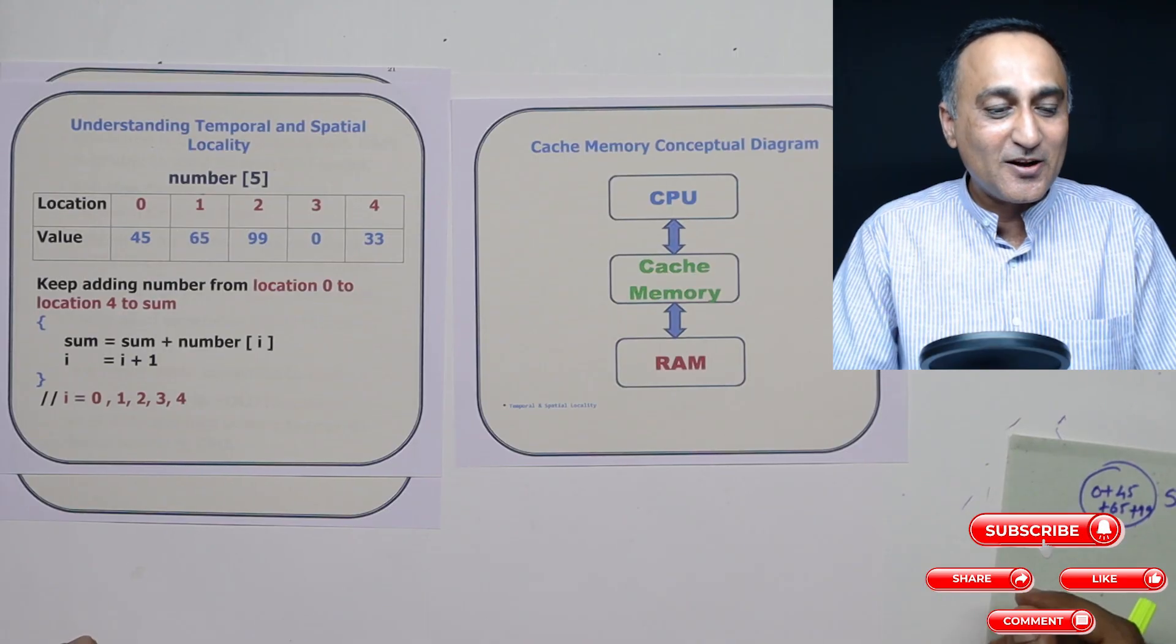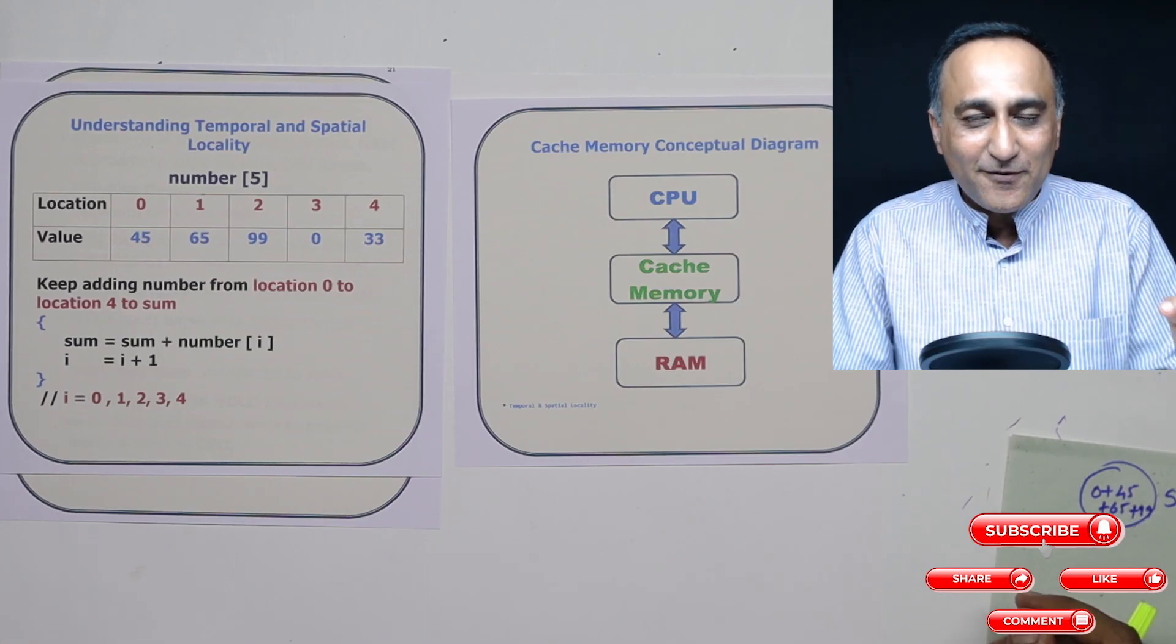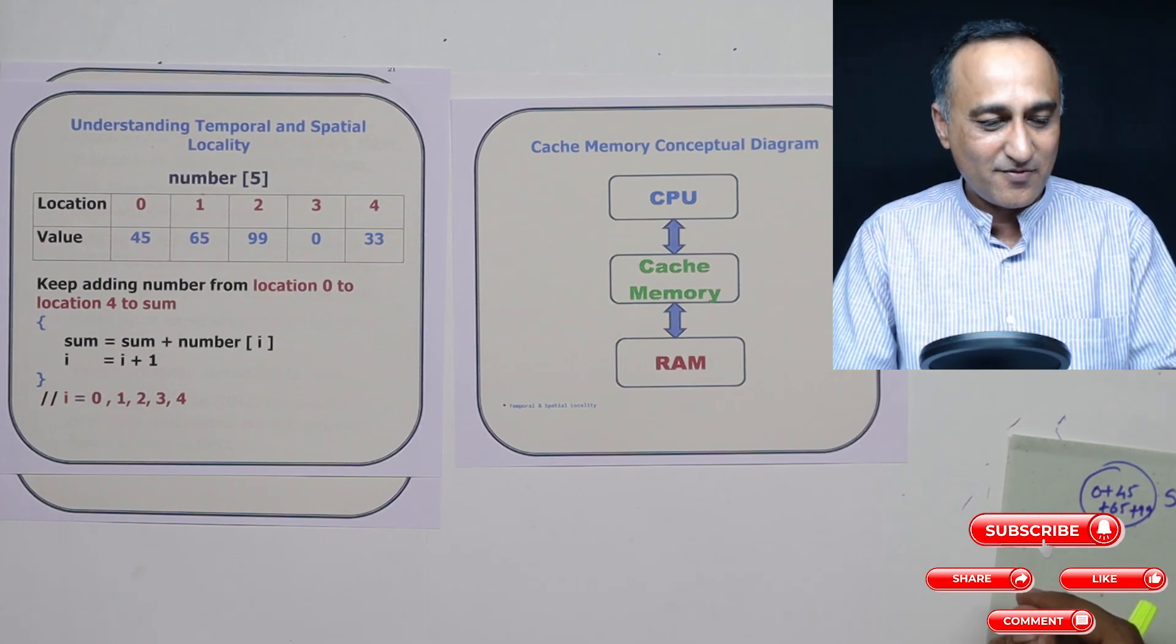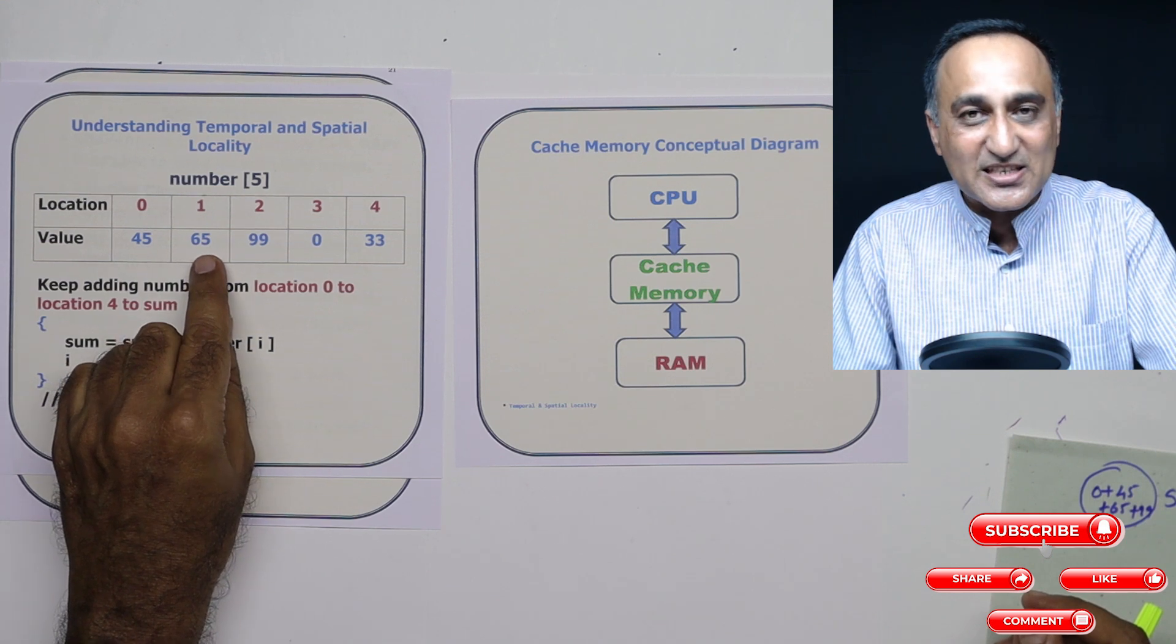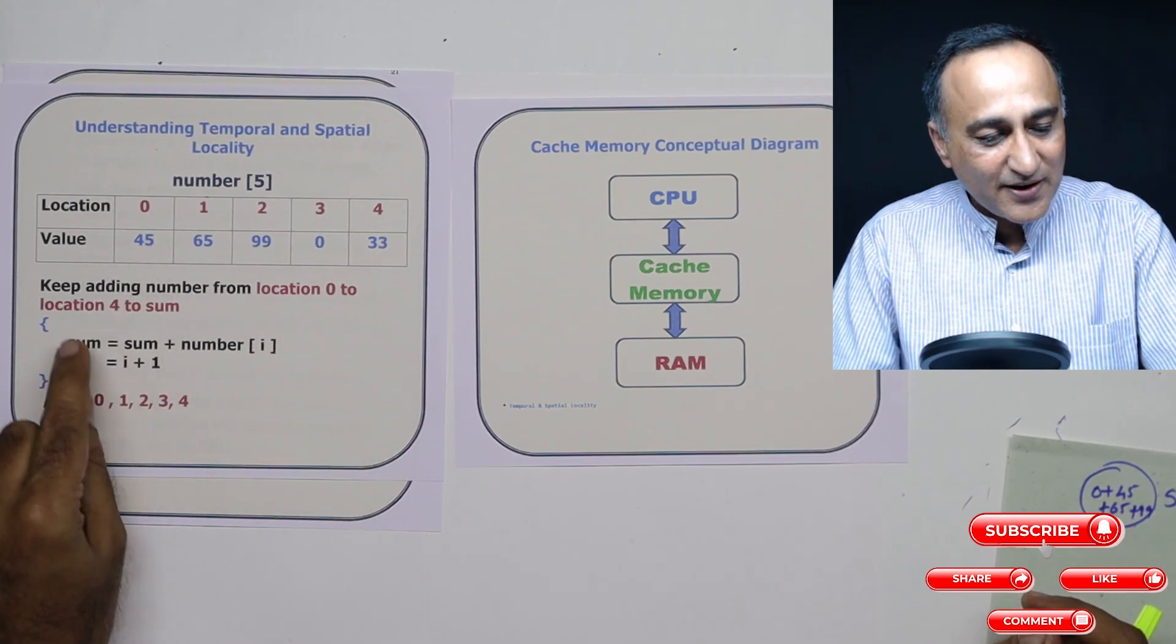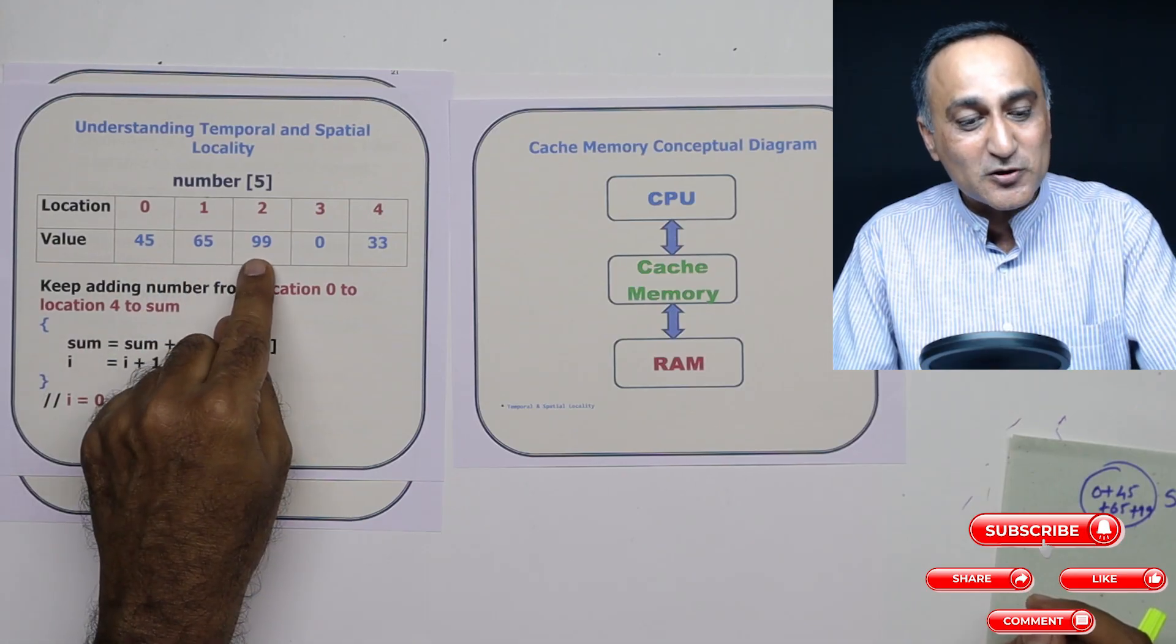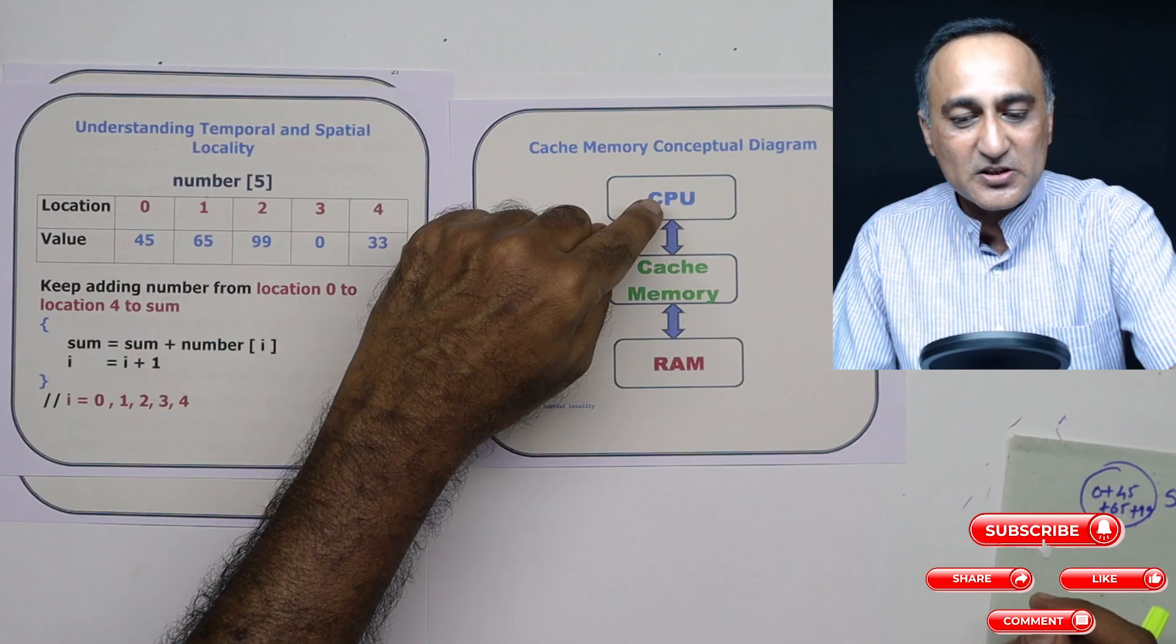Now I will tell you what is spatial locality. Spatial locality works on this principle: it works on the principle that if a data or a code is accessed, there is a very high chance that its neighboring data or instructions will be accessed. Very simple. What it tells me is if I accessed 45 and added it to sum, there is a very good chance that I may next access 65, after 65, 99, after 99, 0, after 0, 33. So the moment I first get 45 and add it to sum, this property of spatial locality will already get 65 and keep it in cache memory. Once you get 65, it will say okay, he is accessing 65, let me also get 99 into cache memory. So it does a prefetch of data or instructions to speed up the CPU working.